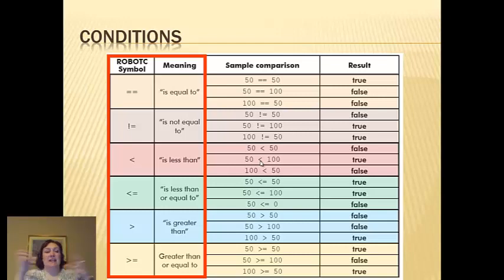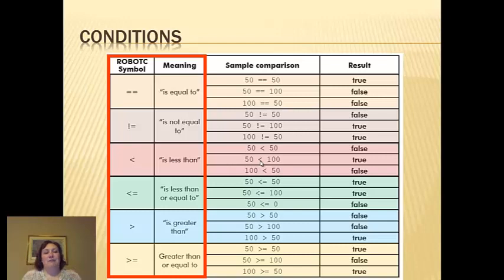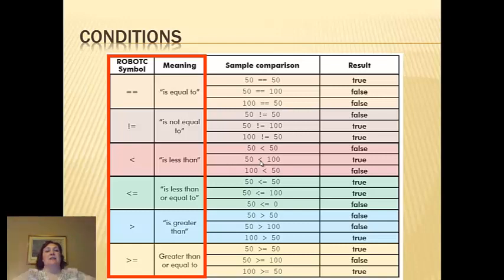When something is less than something else, less than or equal to — you could use those with potentiometer numbers if you want to. Greater than or equal to. But I really just use while loops with 1 == 1. It's the easiest way to do it, and that way you are simply telling your robot to keep cycling this forever, because 1 will always equal 1.